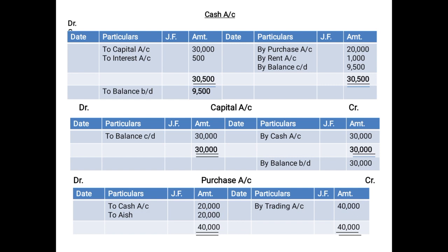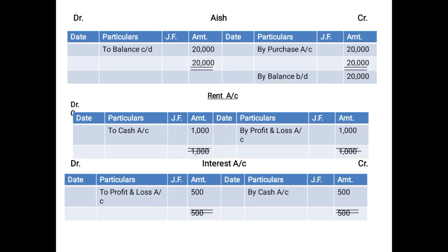For the purchase account — remember, purchase is related to goods — so its balance will be transferred to the trading account. Purchase account had two items on the debit side: To Cash Account 20,000 and To Ash 20,000. Credit side had nothing. Debit total is 40,000, credit total is zero. Debit side is more, so the deficiency is on the credit side. The balancing figure of 40,000 is posted on the credit side as 'By Trading Account 40,000'. Since the balance is transferred to trading account, there is no balance carried down, and therefore no balance brought down.